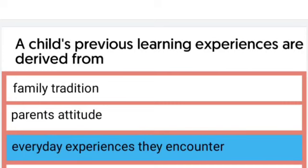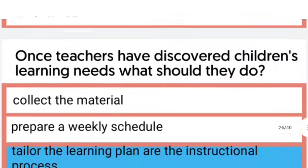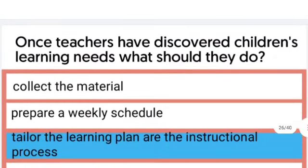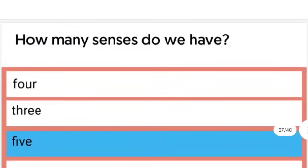Once teachers have discovered children's learning needs, what should they do? They should tailor the learning plan or the instructional process. The next question: How many senses do we have? The right answer is five senses.